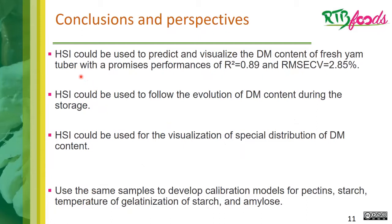Thanks to this work, we prove that hyperspectral imaging can be used to predict and visualize dry matter content of fresh yam tubers with promising performance: R-squared equal to 0.89 and cross-validation error of 2.85%. HSI can also be used to follow the evolution of dry matter content during storage and to visualize the spatial distribution of dry matter in the tuber. For the next step, we will use the same samples to develop calibration models for pectins, starch, temperature of gelatinization of starch, and amylose.